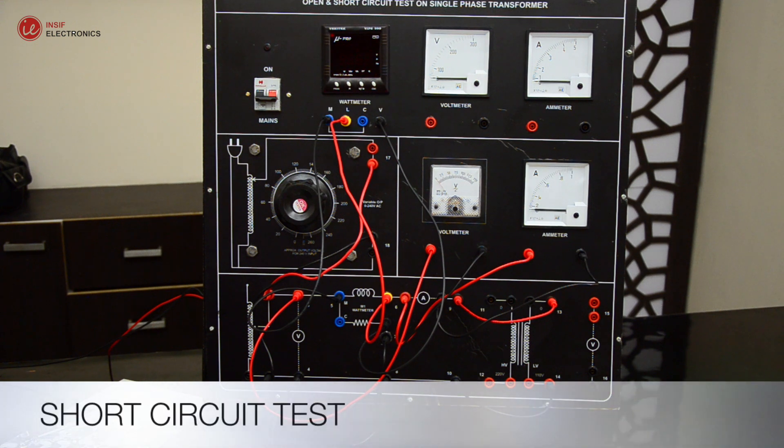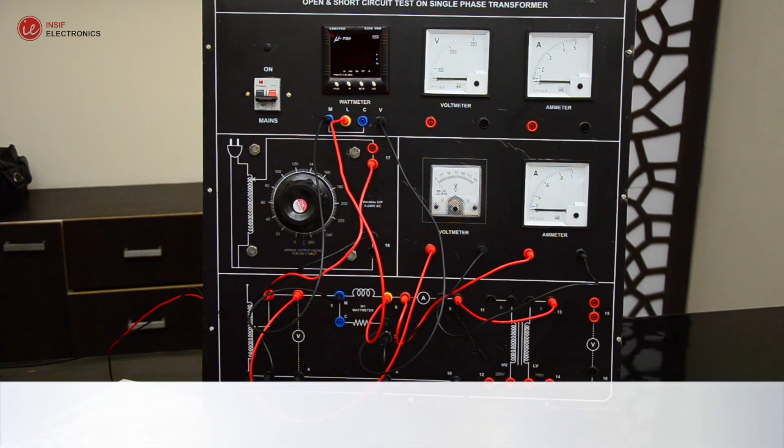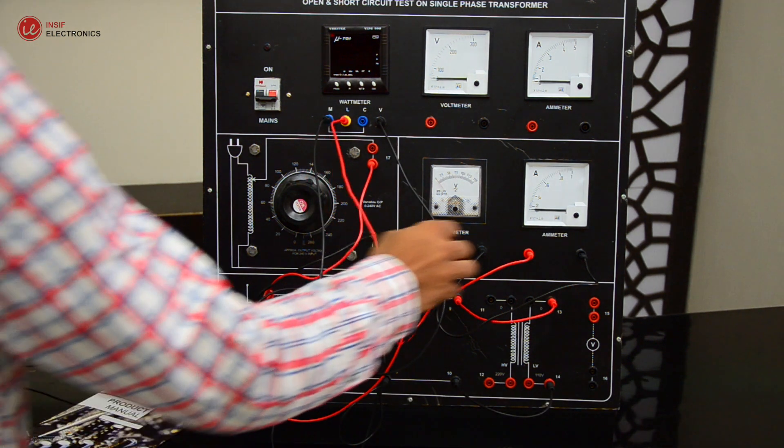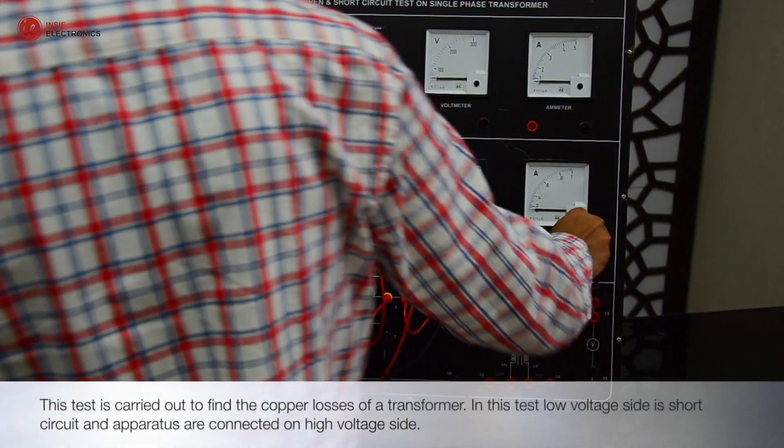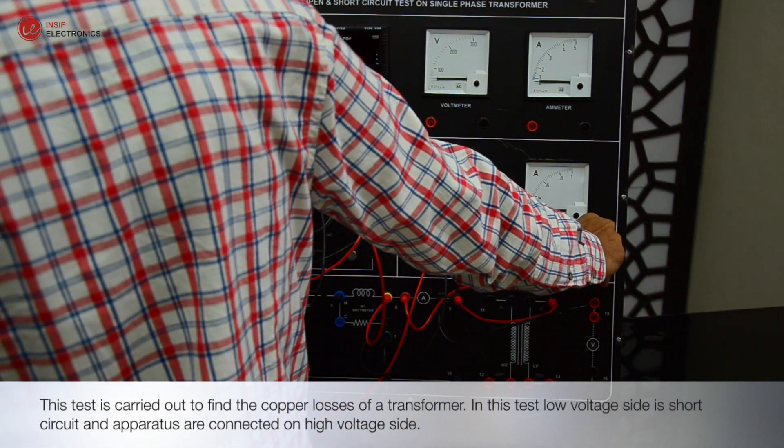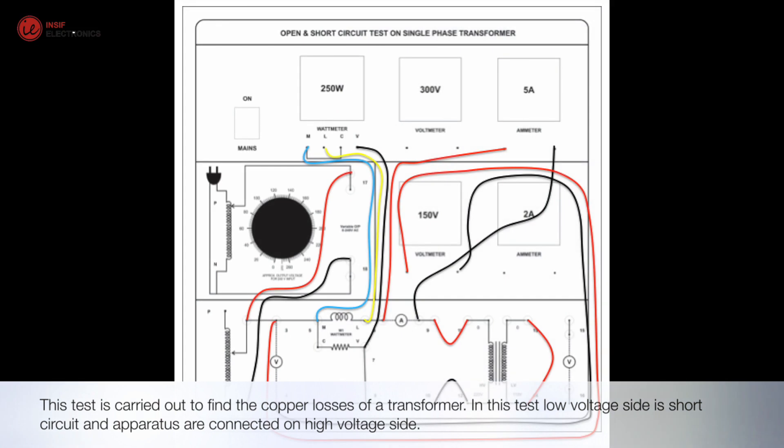This test is carried out to find the copper losses of a transformer. In this test, low voltage side is short circuit and AC input is connected on high voltage side.